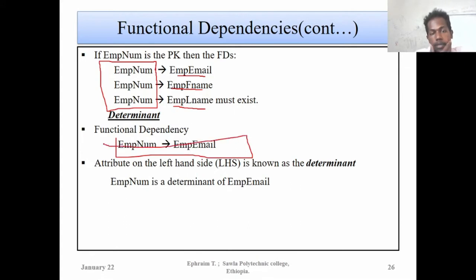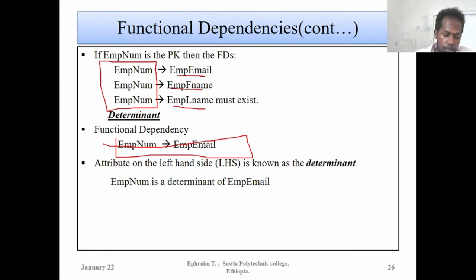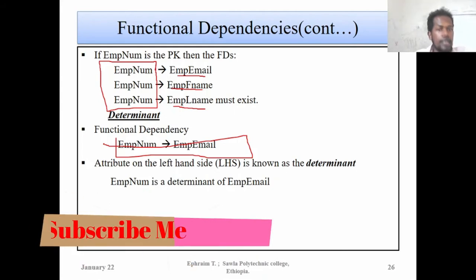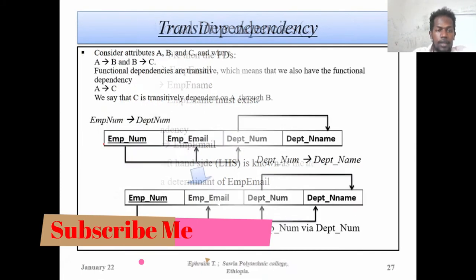Employee number determines employee email, employee number determines employee first name, and employee number determines employee last name. This is the Functional Dependency criteria existing in this table.